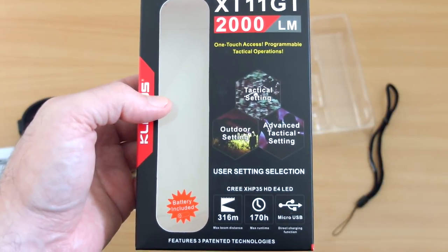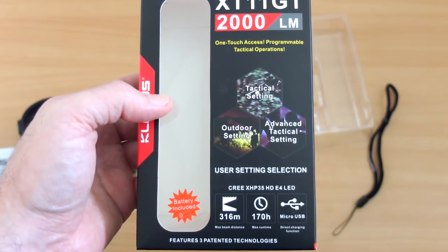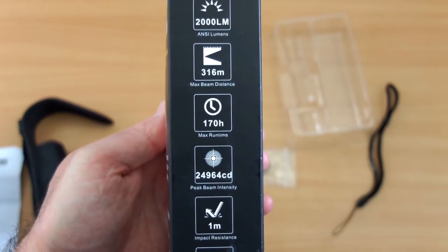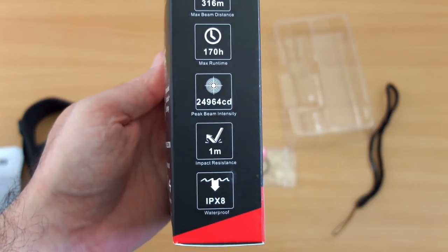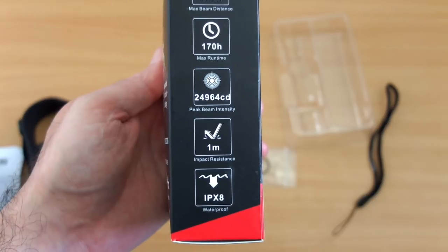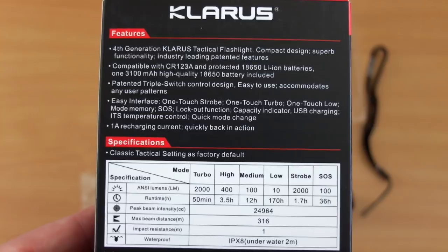This gives you some basic information. You do get a battery included with this. Looking on the side panel gives us a few more details: 316 meters beam distance, there's the peak beam intensity, it's drop proof and IPX8 rated.